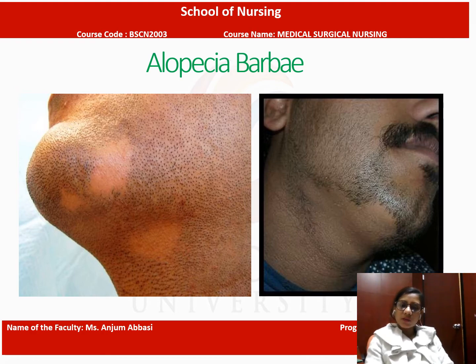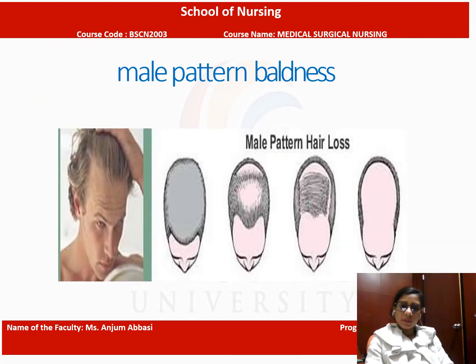Next is alopecia barbae. This is based on location — in the beard area of men, there will be particular areas with loss of hair. In this slide you can see the male pattern of baldness, with different patterns of baldness shown.